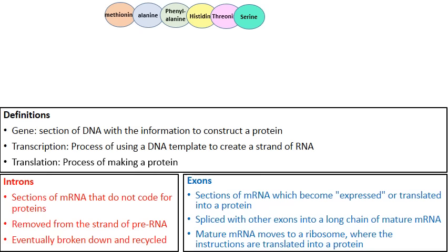Now we have a protein that's been created. But this protein, if you recall, was only created from the instructions of exons. The red introns were spliced out and had no functional purpose in the creation of this particular protein. And so there you have the difference between introns and exons. I hope you found this video helpful. Thanks for watching.